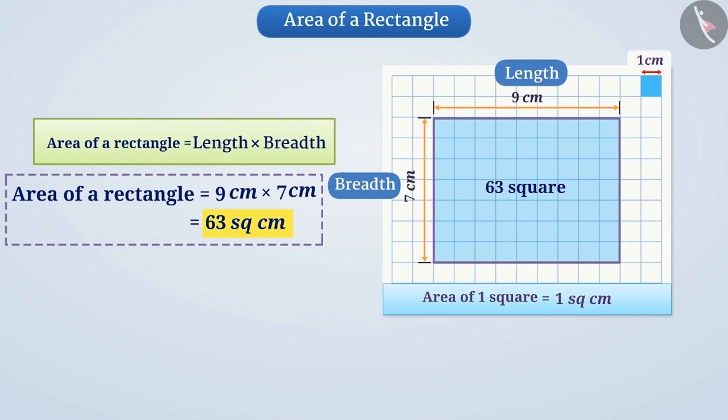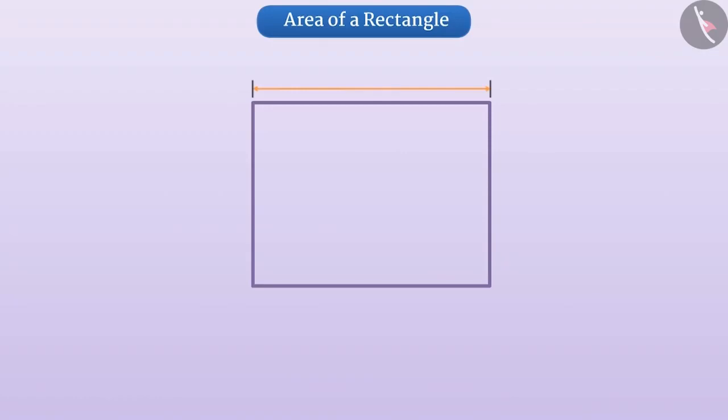So, can you tell us what will be the area of a rectangle whose length is 23 m and breadth is 17 m? Pause the video and find out.